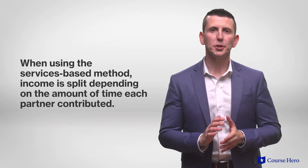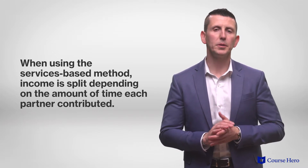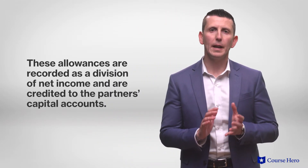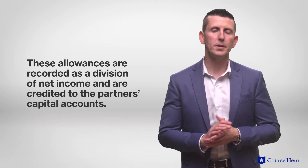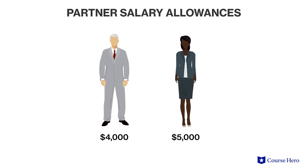When a partnership distributes income based on services, the income is split among the partners depending on how much time is contributed to the partnership. Generally, this can be captured in the form of a salary allowance. Since partners are not employees in a legal sense, these allowances are recorded as a division of net income and are credited to the partner's capital accounts. This usually occurs before the remaining income is divided based on the partnership agreement. For example, if partner John Doe's monthly salary allowance is $4,000 and partner Jane Smith's allowance is $5,000, the remaining net income is then divided equally.